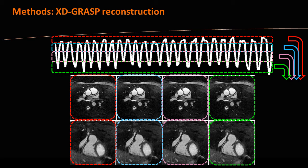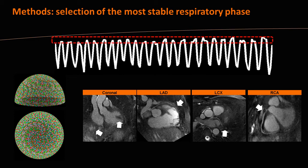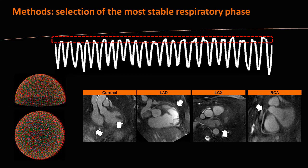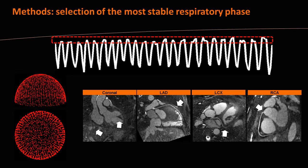Taking this data and applying XD-GRASP yields much sharper and more well-defined image volumes. From our 1D correction, we can select the most stable respiratory phase — usually end expiration — use only that portion of data, and reconstruct with XD-GRASP. The coronaries are much sharper and more visible; in the coronal view both the heart and liver are sharp, because we are not approximating motion correction with a motion model but rather resolving the motion without any prior knowledge of how it looks.